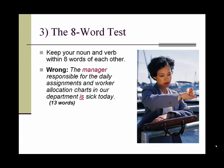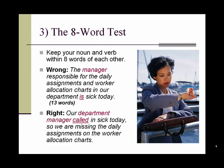Here's a wrong example: 'The manager responsible for the daily assignments and worker allocation charts in our department is sick today.' There are 13 words between the noun and the verb, and 'is' isn't a very strong action word. Here's a better way: 'Our department manager called in sick today, so we are missing the daily assignments on the worker allocation charts.' The character and the verb are right next to each other, so we know right away who is doing what.